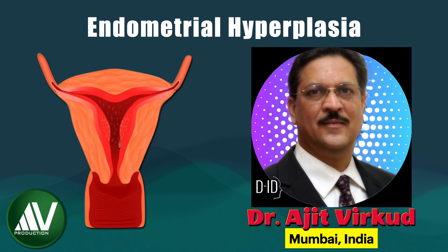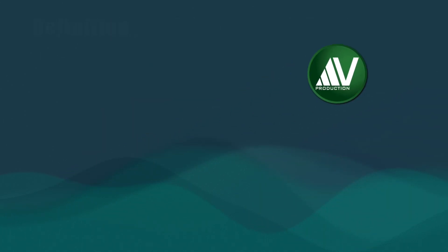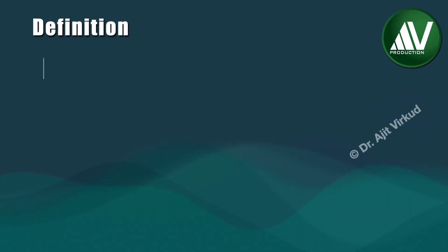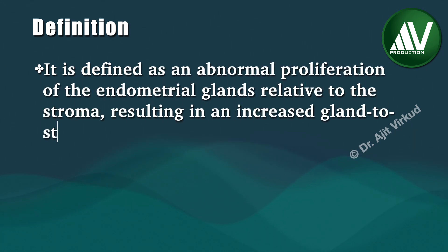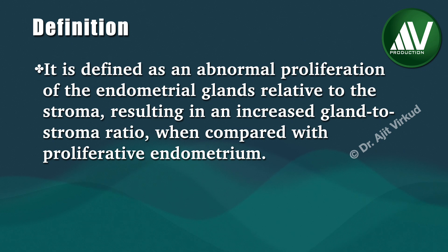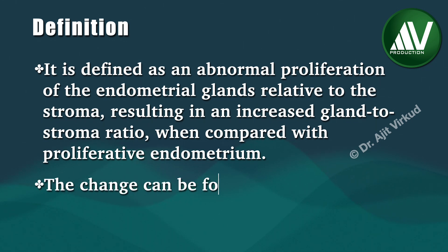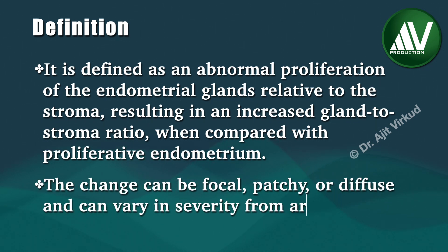It is important because endometrial hyperplasia is a precursor lesion for endometrial carcinoma, especially endometroid type. Endometrial hyperplasia is defined as an abnormal proliferation of the endometrial glands relative to the stroma, resulting in an increased gland-to-stroma ratio when compared with proliferative endometrium. The change can be local, patchy, or diffuse and can vary in severity from area to area.